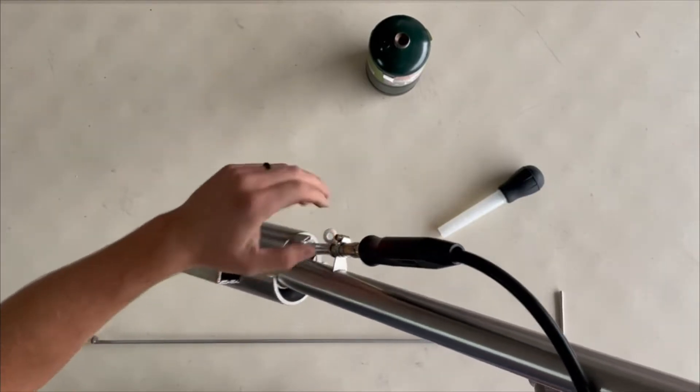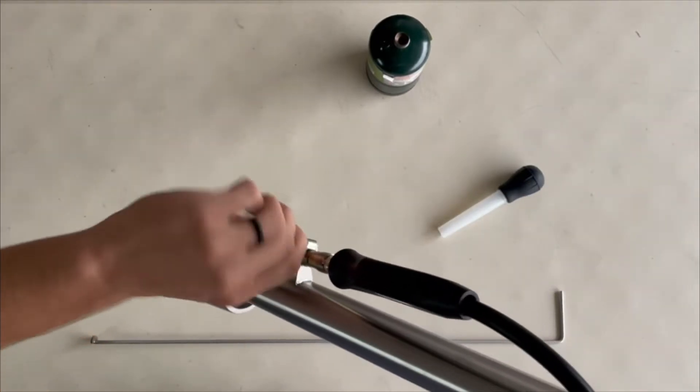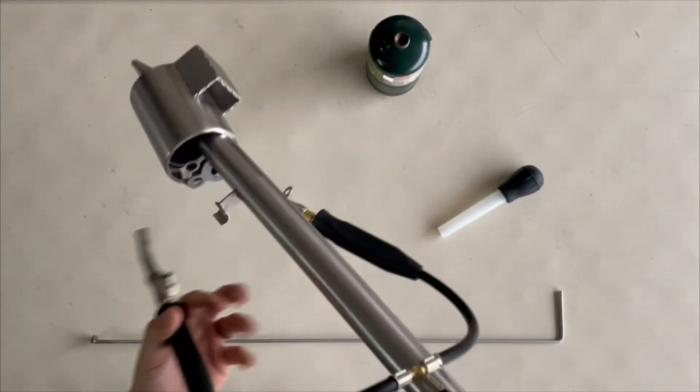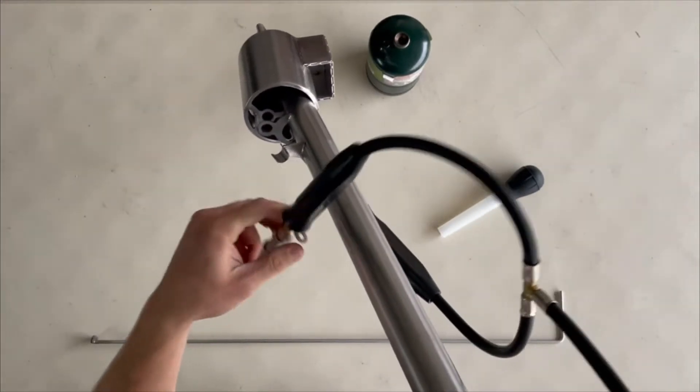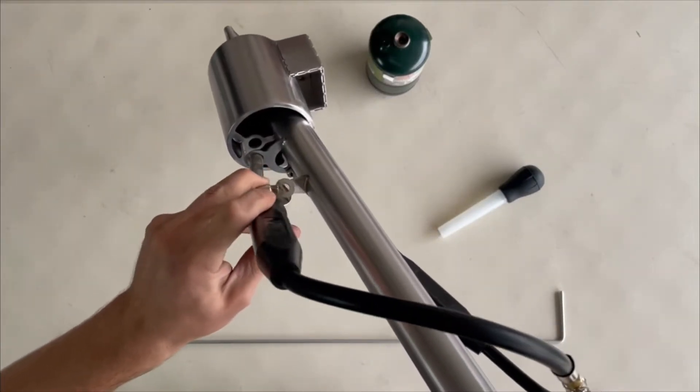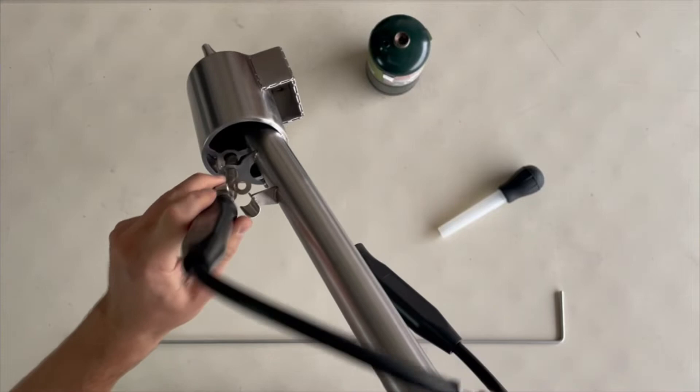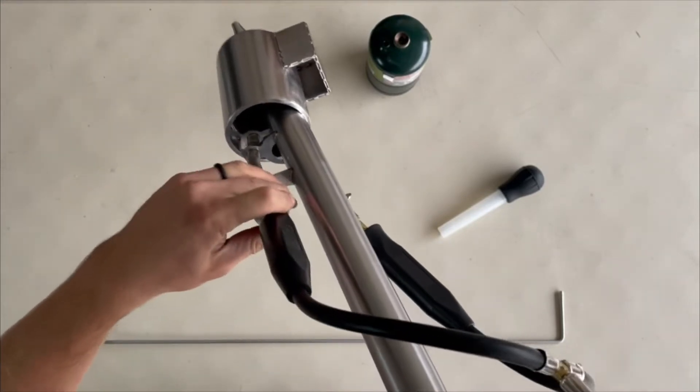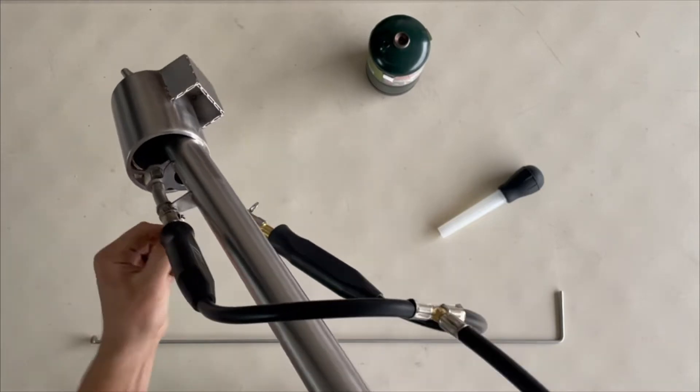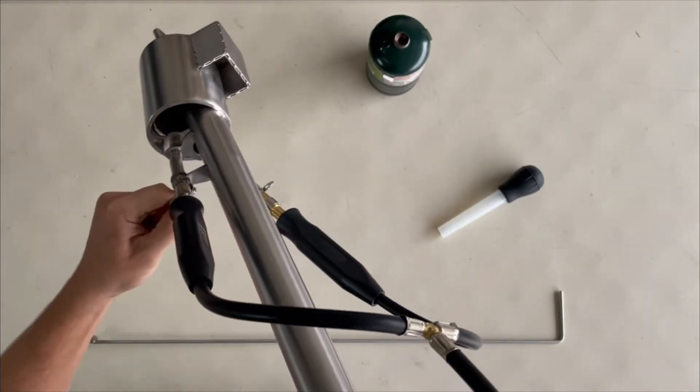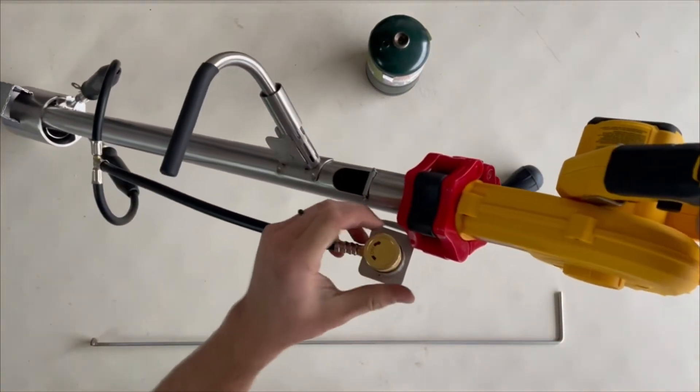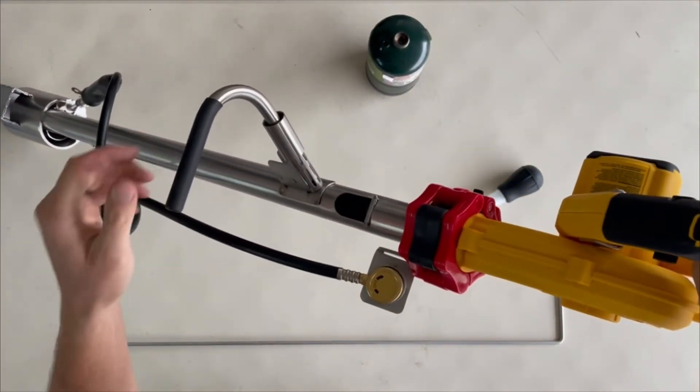Put the hose clamps in place. Same thing with the other side: first you put in the torches straight, then you'll turn it to the side and it'll get into position. Once you've done that, tighten the hose clamps, make sure everything's good, and make sure your propane is closed all the way.